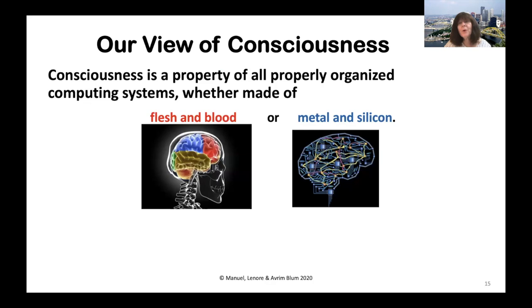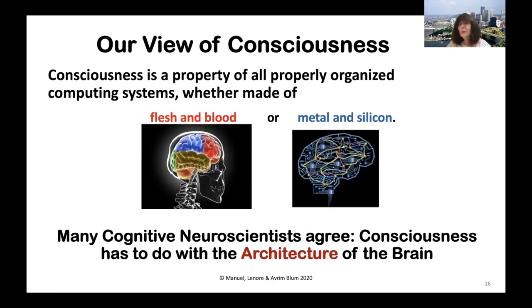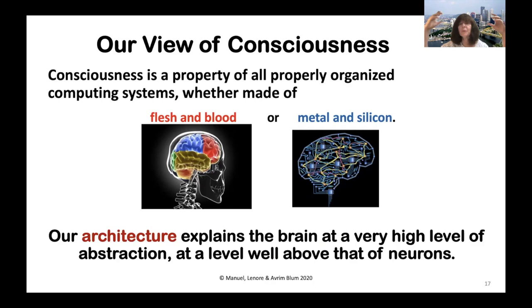Our view of consciousness is that it is a property of all properly organized computing systems, whether made of flesh and blood or metal and silicon. Our thesis is that the architecture of these systems is what makes them conscious — though it's not just the architecture, but also the processors and the dynamics. Many cognitive neuroscientists agree that consciousness has to do with the architecture of the brain, and our architecture explains the brain at a very high level of abstraction, well above that of neurons.